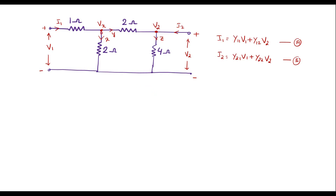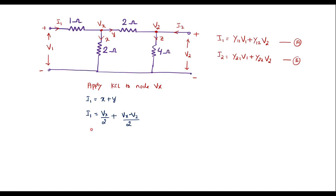Now let me apply KCL to node vx. Incoming current equals outgoing current, so i1 = x + y. Here x = vx/2 and y = (vx - v2)/2. Substituting: i1 = vx/2 + vx/2 - v2/2, which simplifies to i1 = vx - 0.5*v2. Let me call this equation 1.